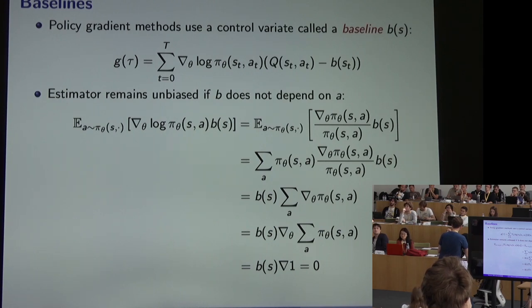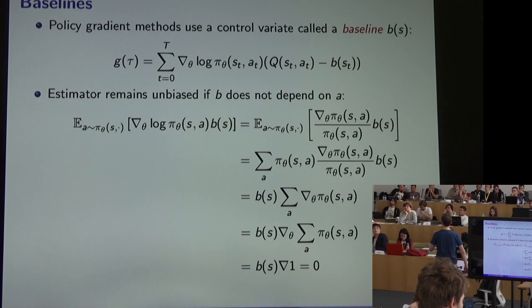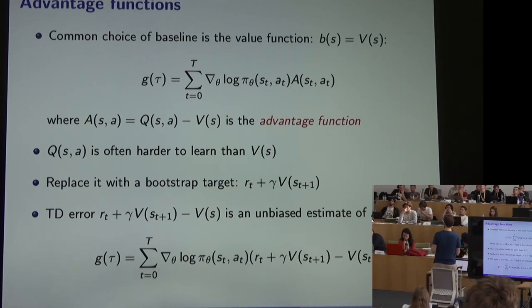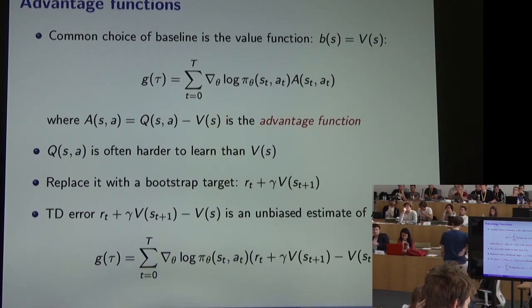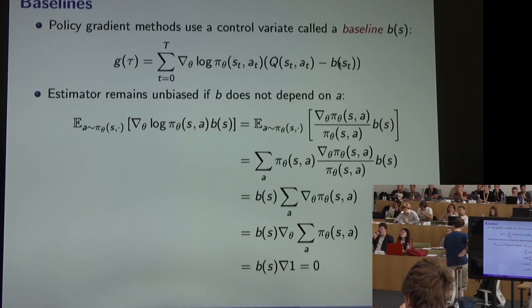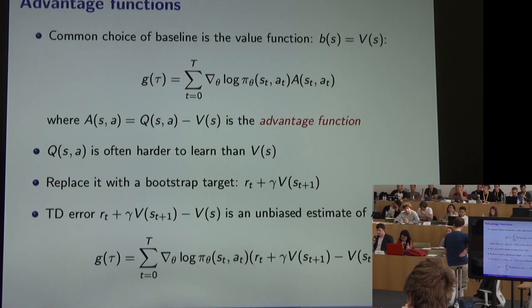So as long as we don't condition the baseline on the action, we don't introduce any bias. We just need to find a baseline that conditions at most on the state and is highly correlated with the Q-value. The most common choice is the value function V. If we choose the baseline to be V, then Q minus b becomes Q minus V, which is just the advantage function A. Our gradient then uses the advantage function as the variance-reducing baseline.